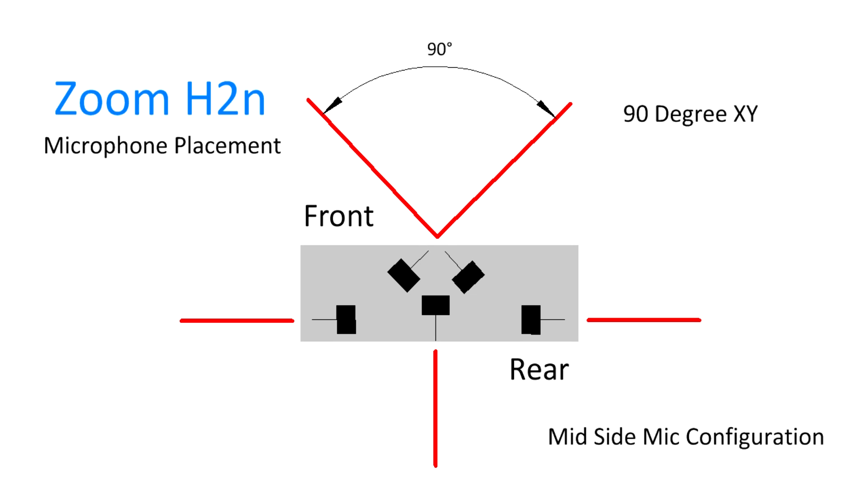The rear side of the Zoom H2N has three more condenser microphones in what is called the mid-side configuration. In the mid-side arrangement, one microphone is facing forward, with two microphones facing the sides at 90 degrees to the middle microphone.